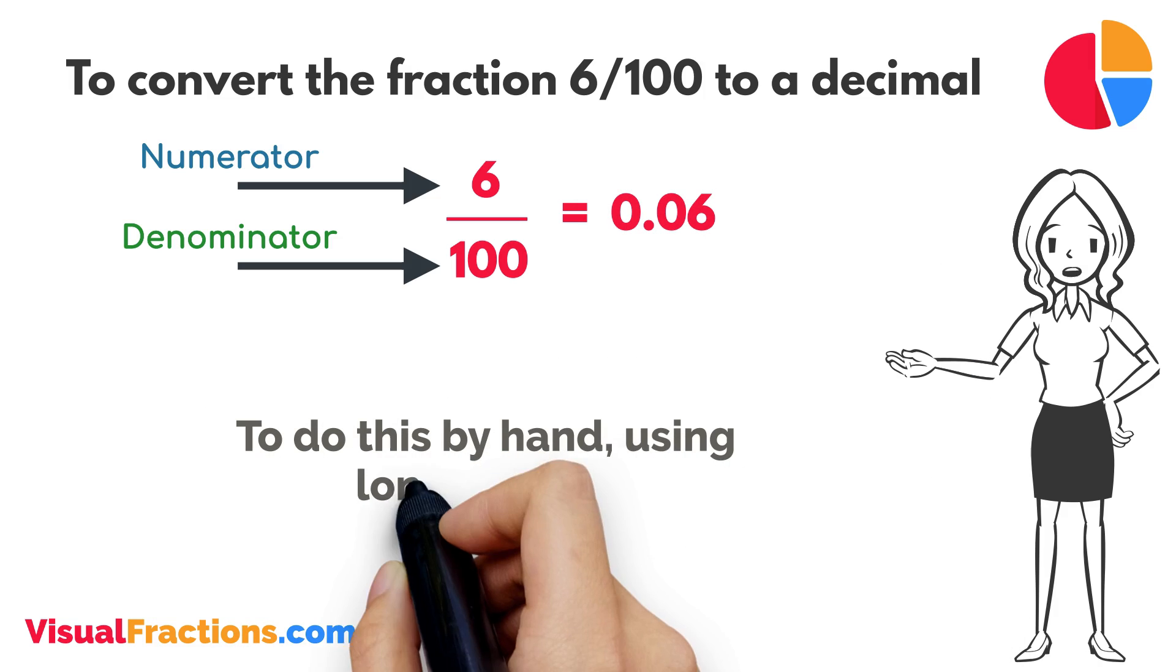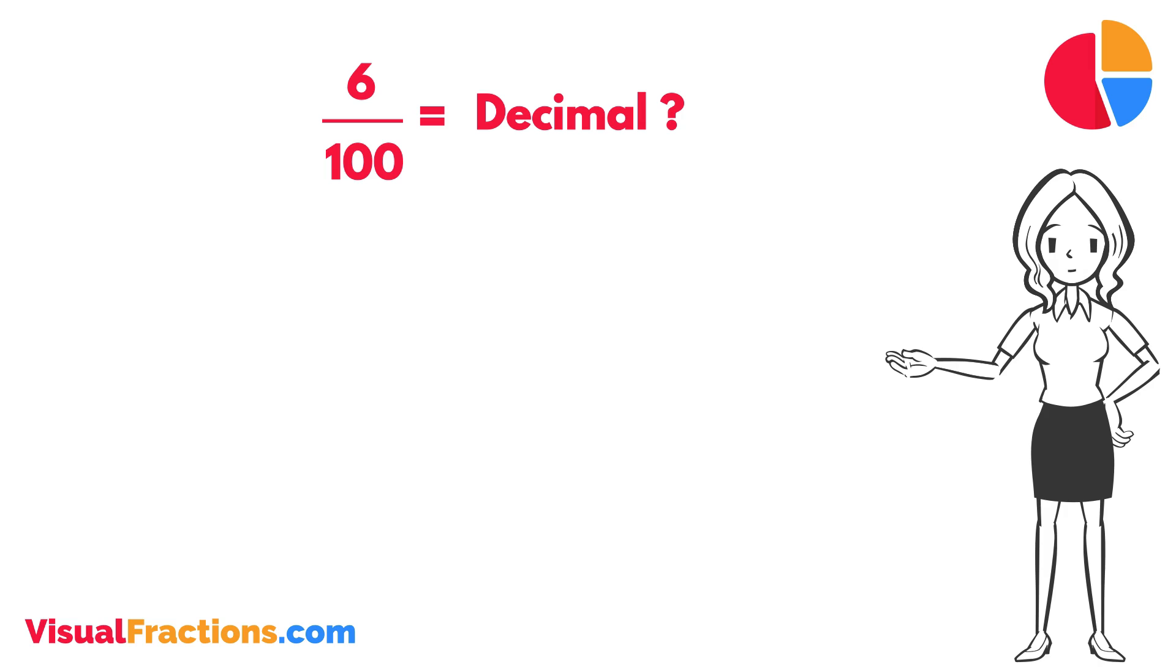To do this by hand using long division, we start by writing 6 as the dividend and 100 as the divisor. Since 100 doesn't fit into 6, we add a decimal point in our answer and append two zeros to 6, making it 600.